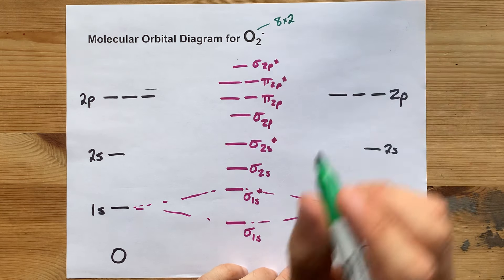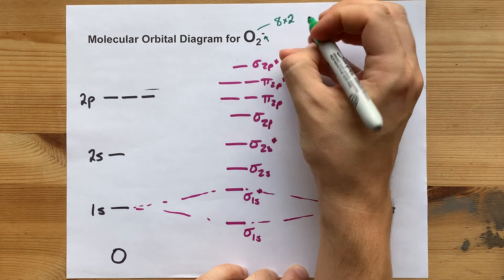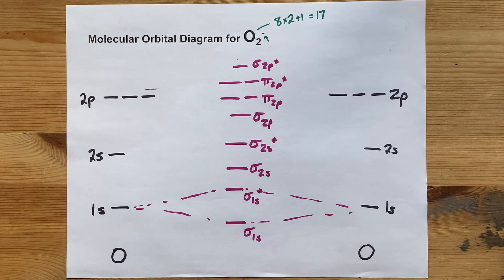Then, because of the extra negative charge, you have to add an extra electron. So we have 17 electrons total.